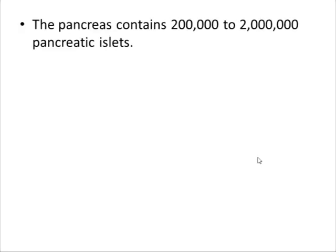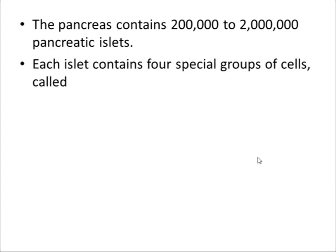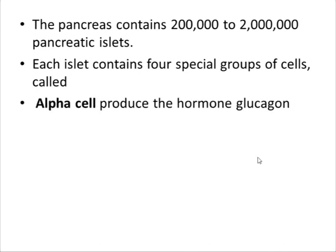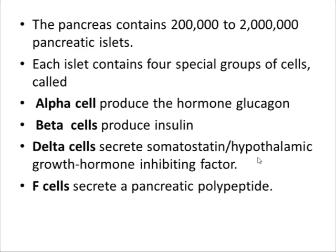The pancreas contains 2 to 2 million pancreatic islets. Each islet contains four special groups of cells: the alpha cells, beta cells, delta cells, and the F cells. The alpha cell is responsible for the production of glucagon.